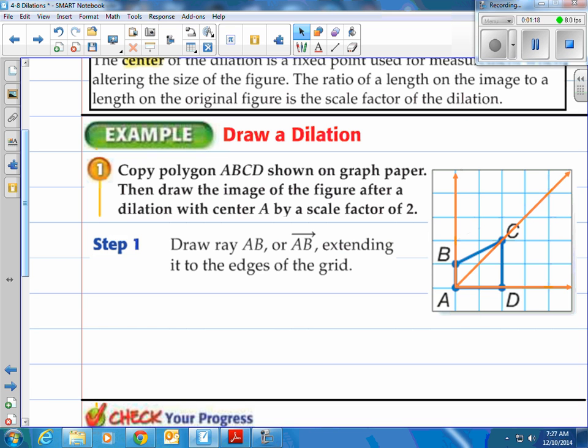So what's the first step? Well draw ray AB as seen here extending into the edges of the grid. You can see I did AB, I did AC, and I did AD. I did all of them.